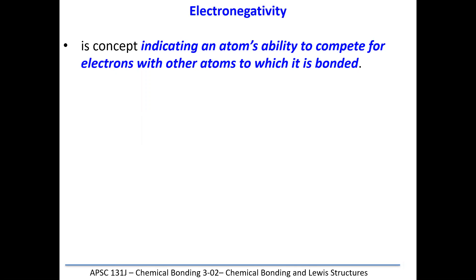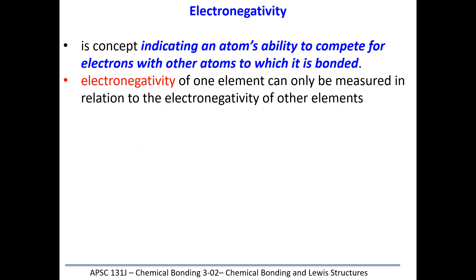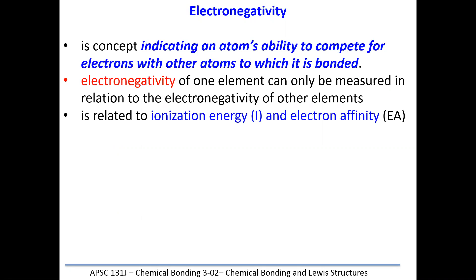Electronegativity is a measure of the atom's ability to compete for the electrons it's sharing within a bond. The atom that is more electronegative will gain electrons more so than the less electronegative atom. This is related to both the ionization energy and the electron affinity. The ionization energy is the amount of energy it takes to remove an electron from an atom. You can think of a bond as being like an elastic band — as it gets stretched, you're storing energy, and that's what happens when you're removing electrons from atoms.